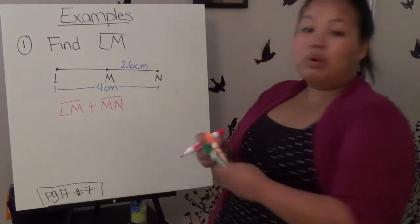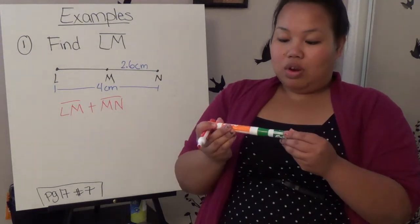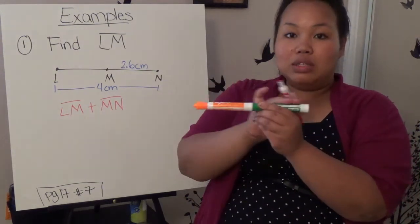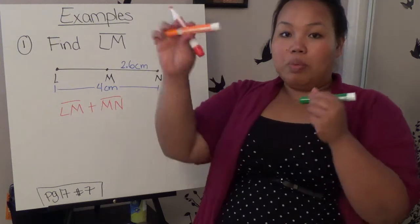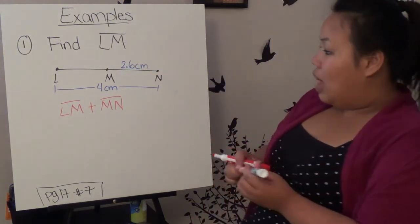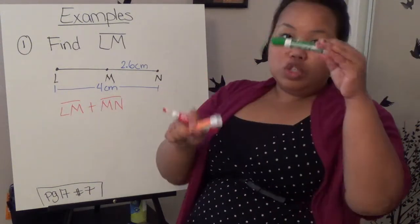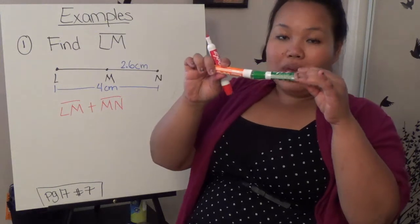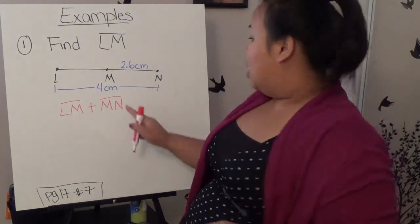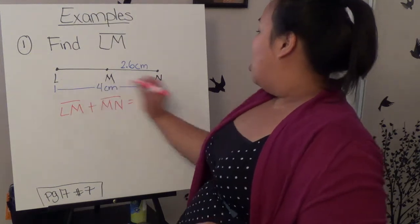For example, if I took this marker, and this marker, and I put them together, whatever this measurement is, if I broke them apart, it would still be the same measurement. So what I need is LM plus MN equals the whole thing. So if this is 2 and this is 3, then the whole thing would be 5. So LM, MN equals the entire line, LN.